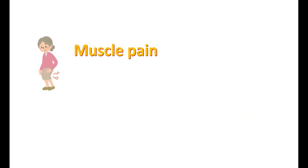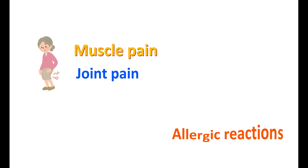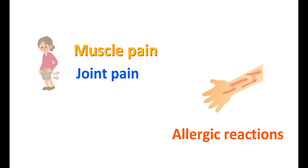Though rare, teriparatide can produce muscle pain and joint pain. A few people may experience allergic reactions resulting in rashes and swelling of the face and tongue. However, these side effects are rarely observed. These are the various key facts about teriparatide, which is used for the treatment of osteoporosis in people with high risk of bone fractures.